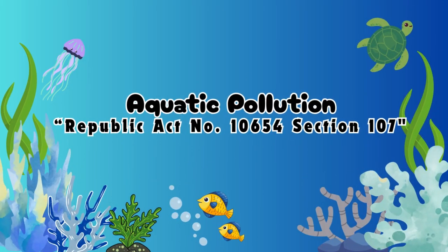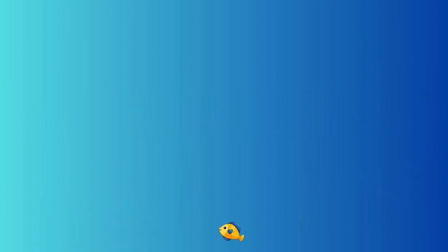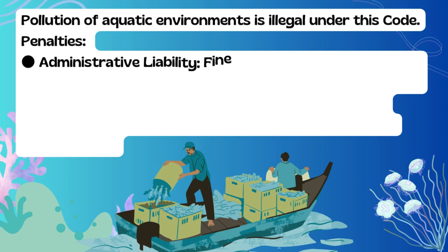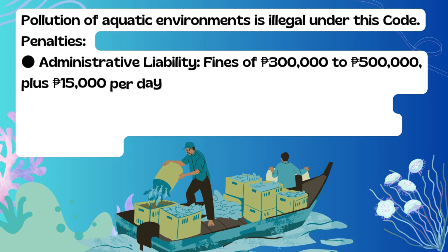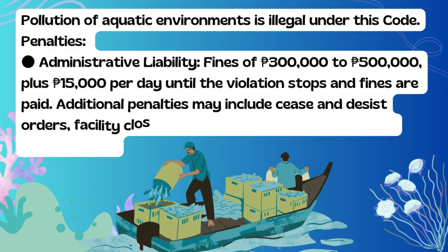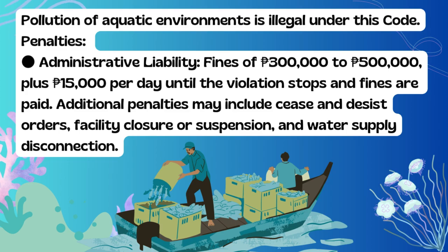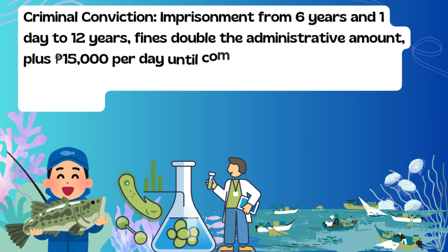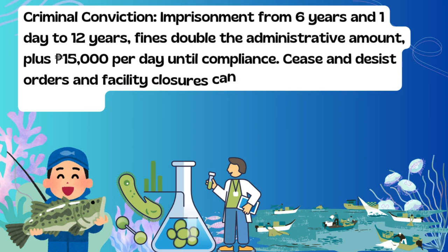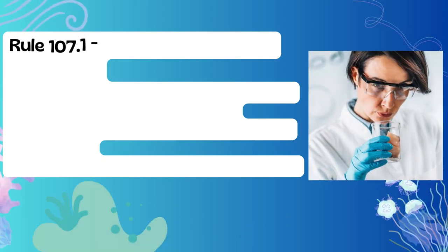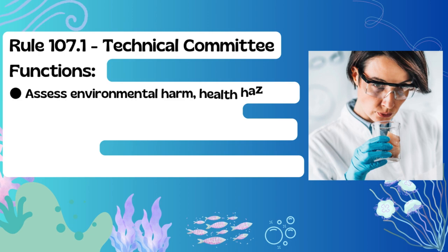Aquatic Pollution — Republic Act No. 10654, Section 107: Pollution of aquatic environments is illegal under this code. Penalties — Administrative liability: Fines of 300,000 to 500,000 Philippine Pesos, plus 15,000 Philippine Pesos per day until the violation stops and fines are paid. Additional penalties may include cease and desist orders, facility closure or suspension, and water supply disconnection. Criminal conviction: Imprisonment from 6 years and 1 day to 12 years, fines double the administrative amount, plus 15,000 Philippine Pesos per day until compliance. Cease and desist orders and facility closures can be issued pending case resolution.